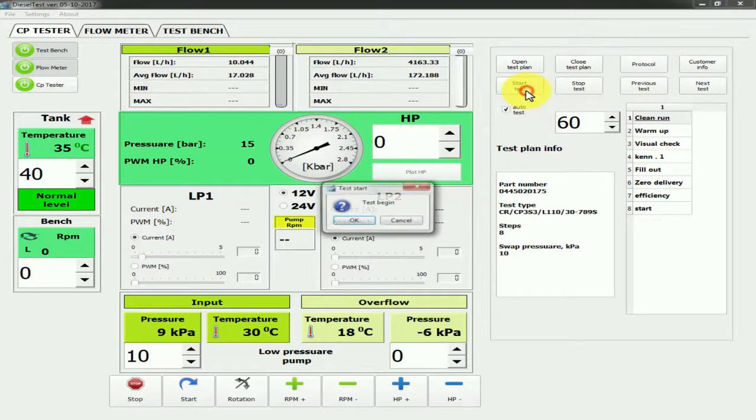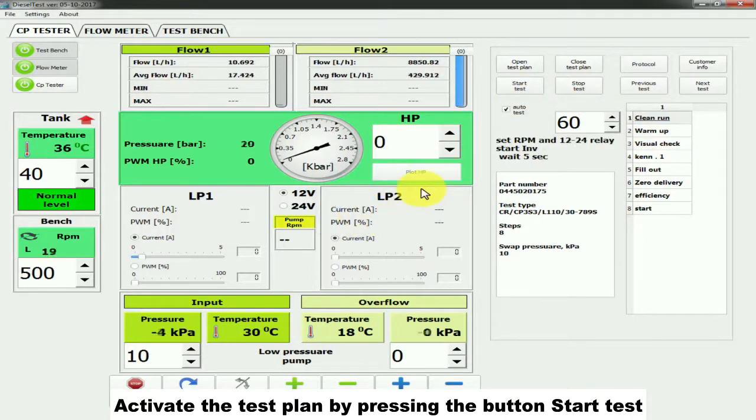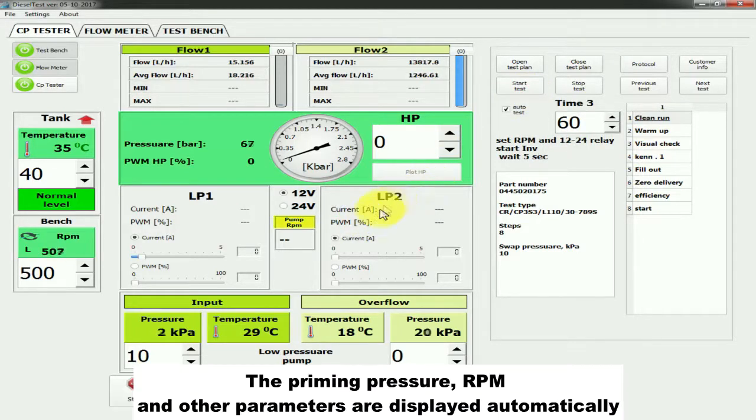Activate the test plan by pressing the button Start Test. The priming pressure, RPM, and other parameters are displayed automatically.